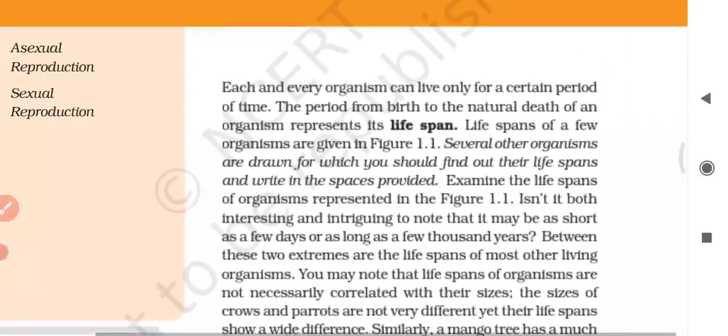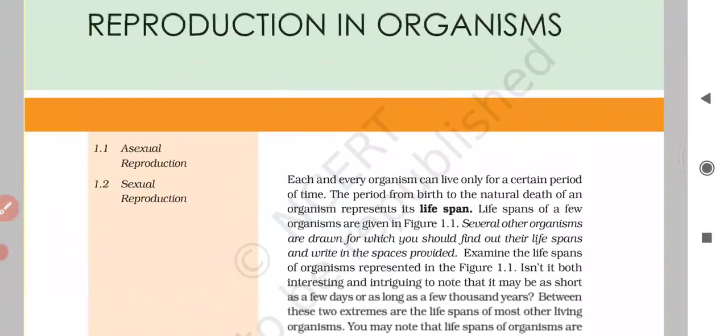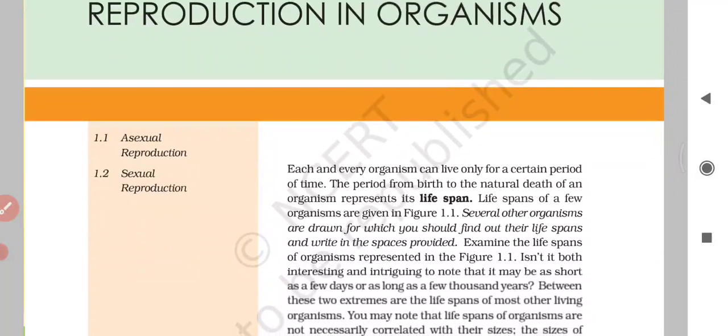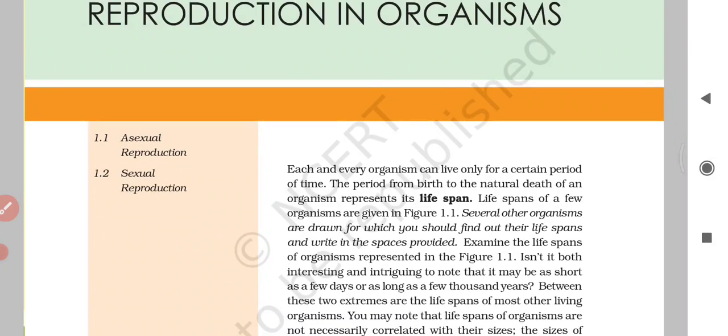Our chapter Reproduction in Organisms we will start. As you know, reproduction is of two types: asexual and sexual reproduction. And each and every organism can live only for a certain period of time, and this period from birth to natural death is known as life span.